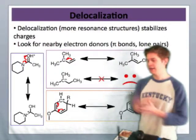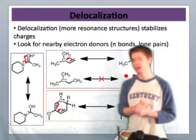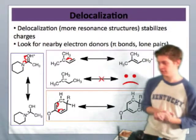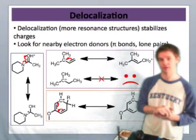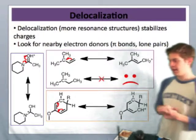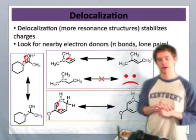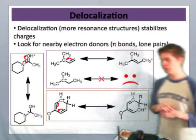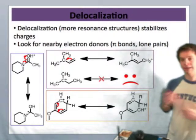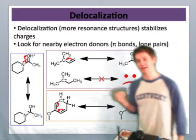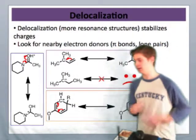The bottom case is an intermediate that you may run into in studies of what's called aromatic chemistry. Aromatic compounds are a special class of cyclic conjugated molecules, and many times aromatic compounds can get protonated or react with other electron acceptors in order to produce cationic intermediates. One of those is shown here.